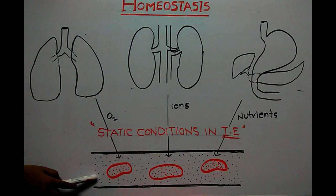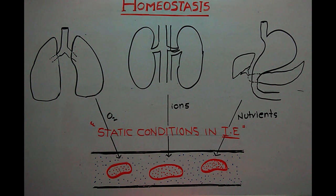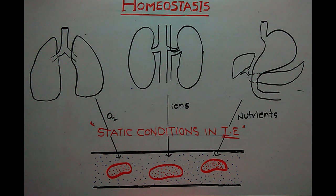All these — oxygen, ions, and nutrients provided by different organs — are present in the extracellular fluid and supplied to the cell whenever needed. If all the organs cooperate for homeostasis, it is called normal functioning, or physiology. If not, if there is any deviation from homeostasis, then it is called pathology.